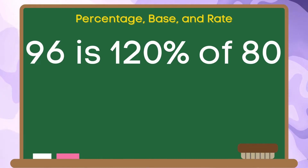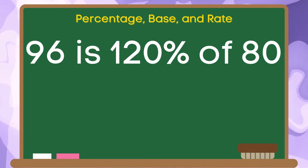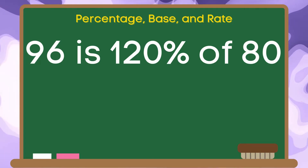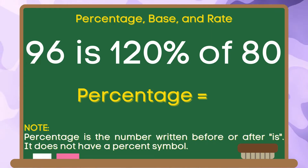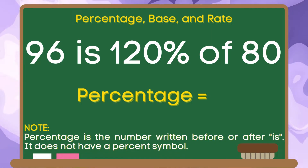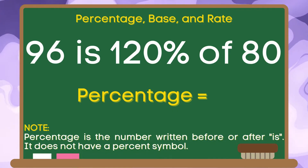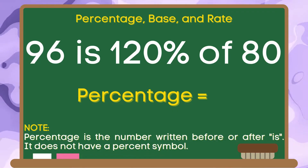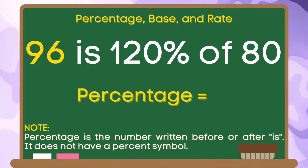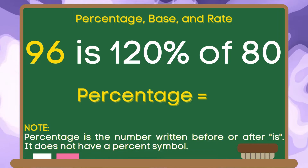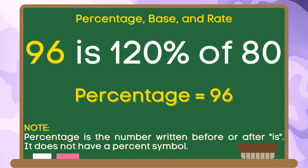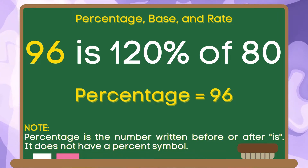We have the example: 96 is 120% of 80. Let us identify the percentage. Take note that the percentage is the number written before or after the word 'is' and does not have a percent symbol. In this example, 96 is written before the word 'is.' Therefore, the percentage in this given example is 96.